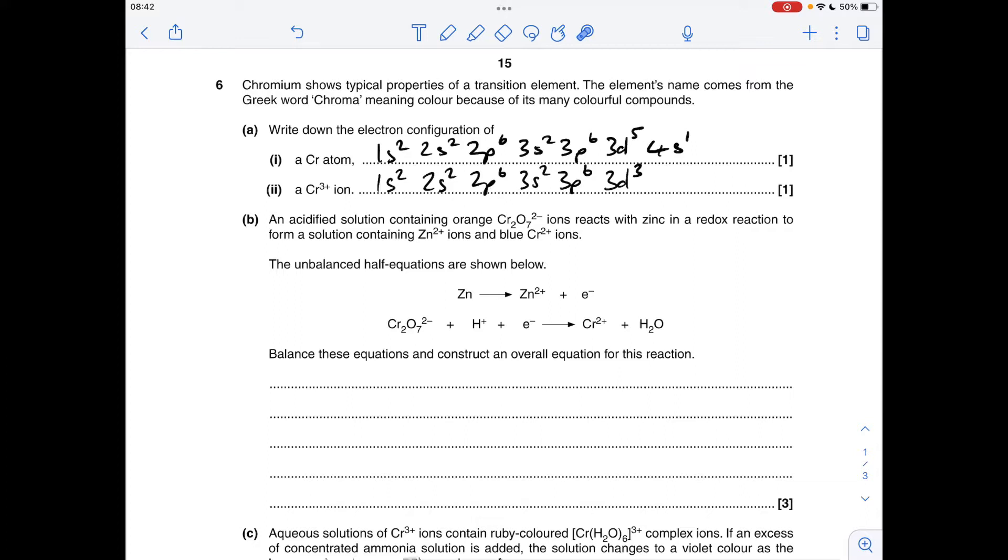Okay, so moving on to B now, so we've got to balance the two half equations and then combine them to form the overall redox reaction. Easy one to start with. The zinc's balanced already, but we just need two electrons to balance the charge.